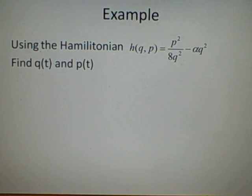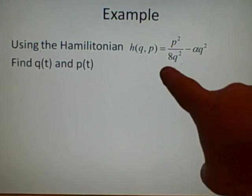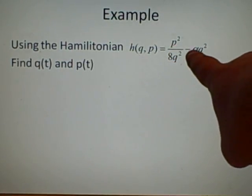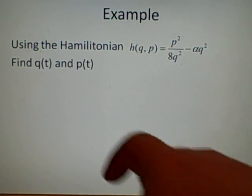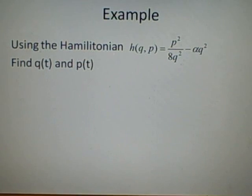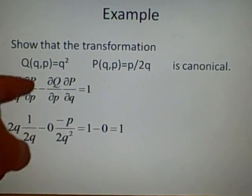Now, using the Hamiltonian, h(q,p) equals p squared over 8q squared minus alpha q squared, find q(t) and p(t). Right, now, here we have to substitute in the values which we have from this question, here and here.